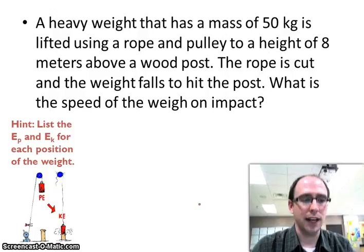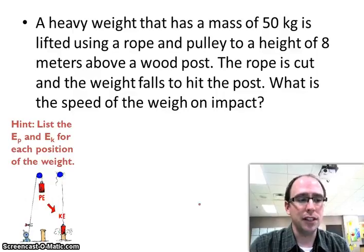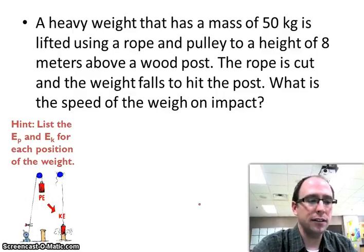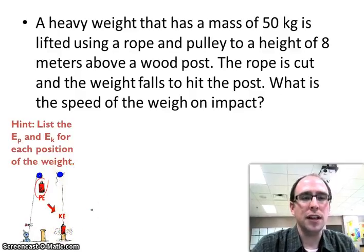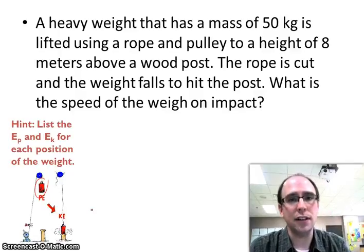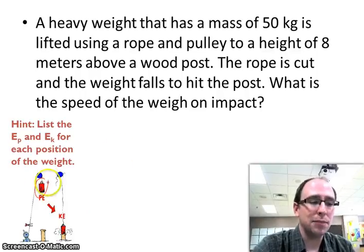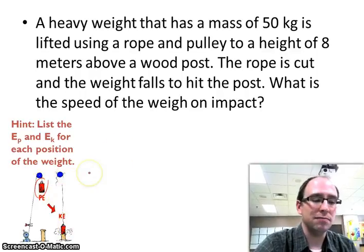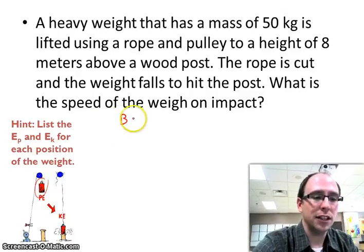Let's see an example of that. Here's something very similar, where you have a heavy weight that's lifted up using a pulley and rope, and it's lifted up to a height where it has a lot of potential energy. Then the rope is cut and it falls on this wooden post. You need to determine the speed of the weight on impact with the wooden post — not like it falls on the wooden post a couple of seconds later when it's not moving. What's the speed on impact? Because it has potential energy and when it falls it builds up kinetic energy, we can solve it using the idea of potential and kinetic energy.